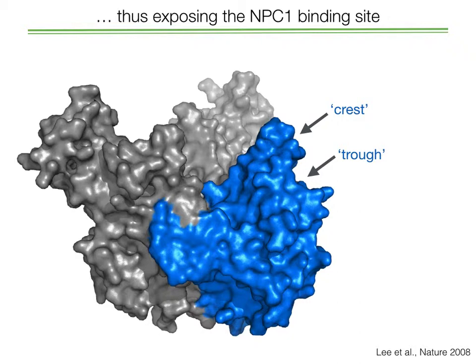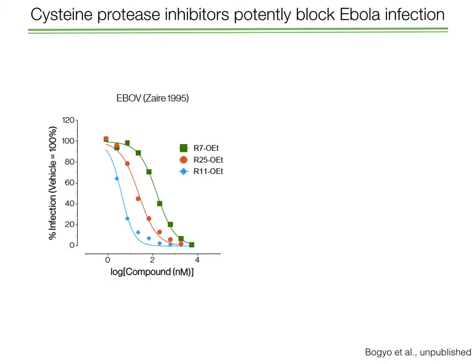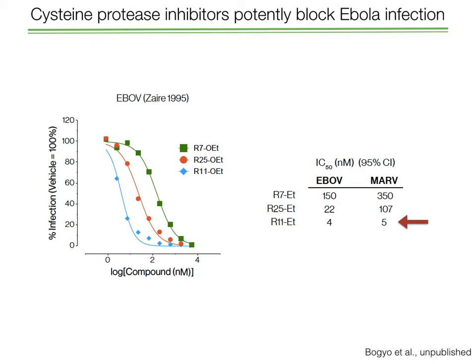Shown on this slide are examples of candidate inhibitors we've developed with collaborators. As we add more and more of these compounds to cells, we can inhibit viral infection in a dose-dependent manner. Some of these inhibitors work at really low concentrations — for example, compound R11-ET blocks Ebola infection with an IC50 of 5 nanomolar, meaning you only need 5 nanomolar of this drug to inhibit Ebola infection by 50%. This is the kind of potent activity needed for a drug to be useful. However, we only have cell data so far, and a big challenge is getting these drugs to work in animals and humans while showing they're safe and bioavailable.